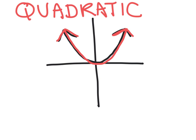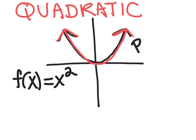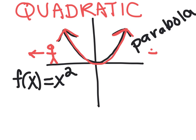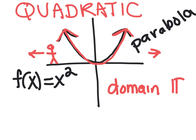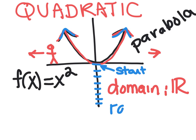This is a quadratic function. Its equation is given by f of x equals x squared, also called a parabola, and its shape is parabolic. If you were going along the x-axis walking to the left or right, the graph goes on forever, so its domain is all real numbers. But on the ladder, working your way up the graph, it doesn't start until right there and goes up forever, so its range is y is greater than or equal to zero.